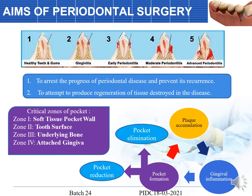Periodontitis is always preceded by gingivitis. If gingivitis is not treated at a particular stage it moves on to early periodontitis, and if not treated further, to moderate and advanced periodontitis with advanced bone and tissue loss. The main aim of periodontal surgery is to arrest this periodontal disease, prevent its recurrence, and attempt to produce regeneration of the destroyed tissues — either bone loss or soft tissue loss.